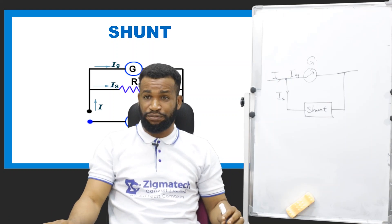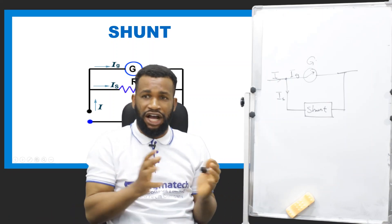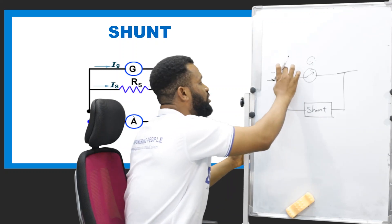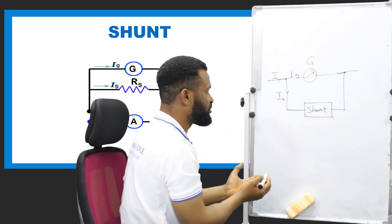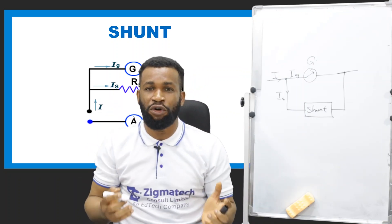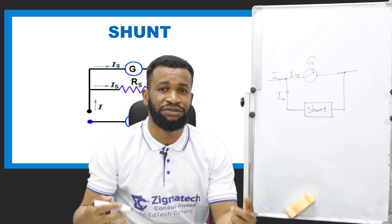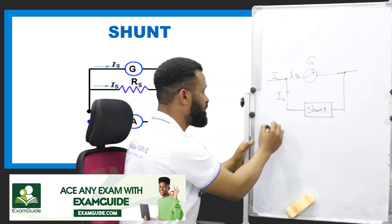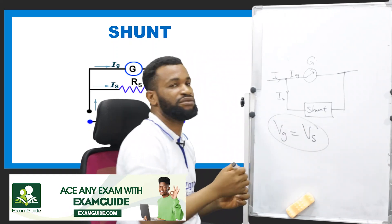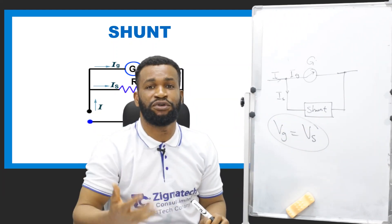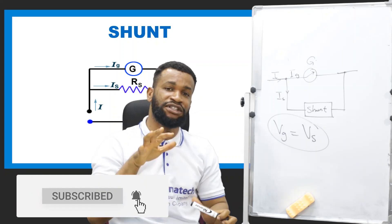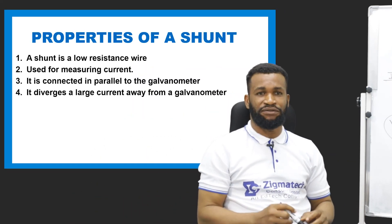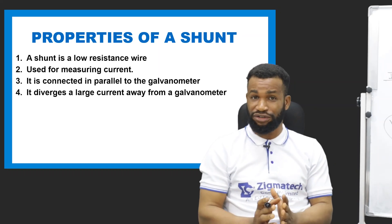I won't go further into Kirchhoff's current principles right now. Just know that for any junction, current divides. If you know that current divides itself in a parallel circuit, then what is the voltage property? The voltage across the galvanometer must be the same as the voltage across the shunt. This is what we will use throughout this class to prove the relationship for solving problems. In industry, you may be asked to construct a shunt to help a galvanometer.